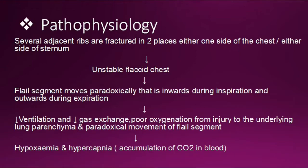Normally, when we inhale, the chest moves outwards, and when we exhale, the chest moves inwards. But in flail chest it occurs paradoxically. Then there will be decreased ventilation and decreased gas exchange. Poor oxygenation from injury to the underlying lung parenchyma and paradoxical movement of the flail segment ultimately leads to hypoxia, hypoxemia, and hypercapnia.